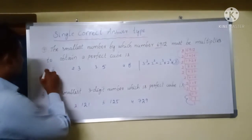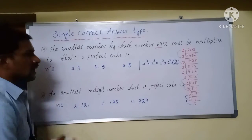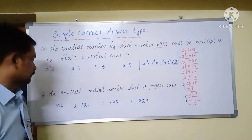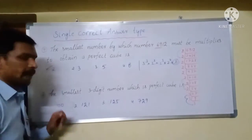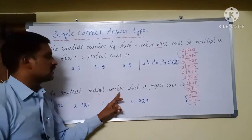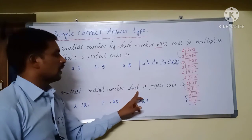So option number 1 is the correct answer for problem 7. Coming to problem 8: the smallest 3-digit number which is a perfect cube.